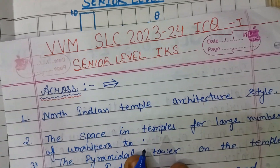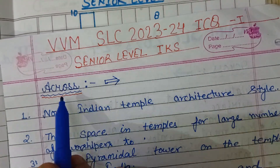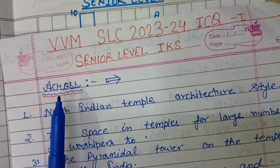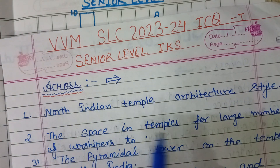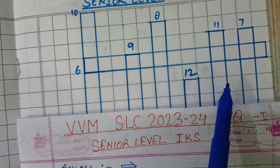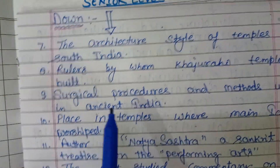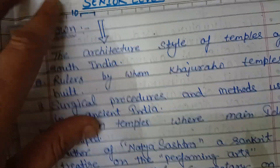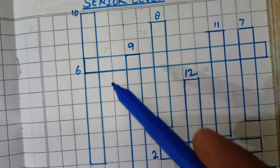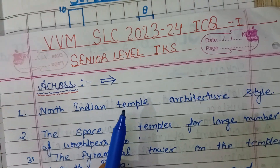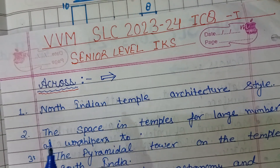First question. 'Across' means the answers to these questions are filled in the horizontal rows, and 'down' means the answers are filled in the downward columns in the respective number.